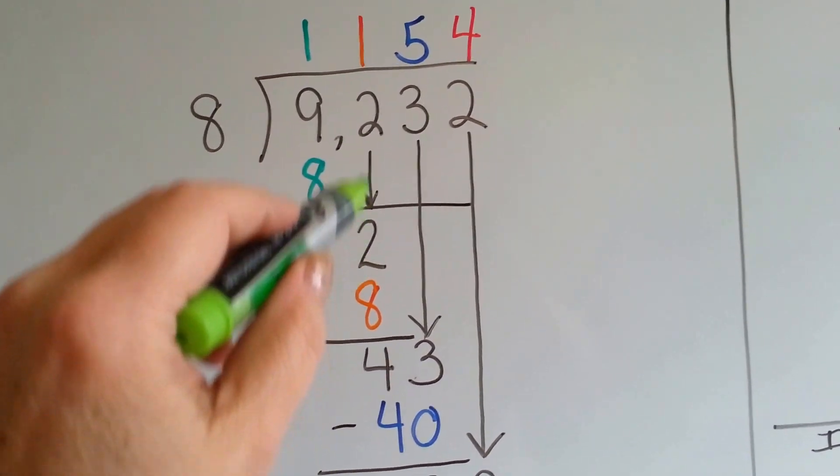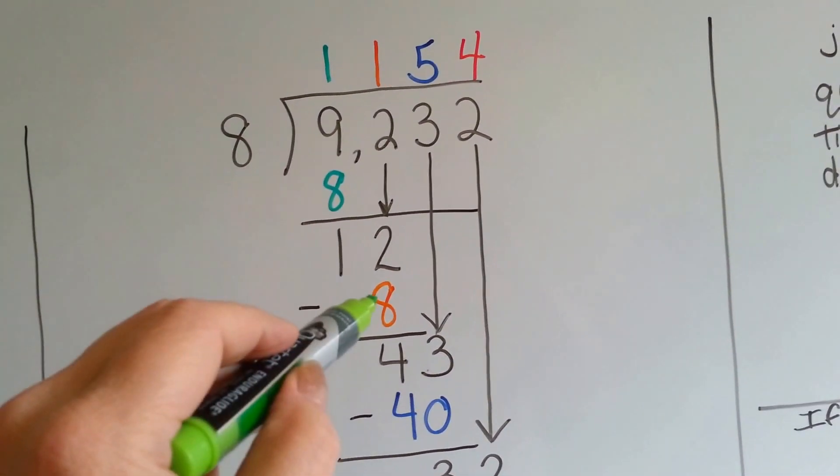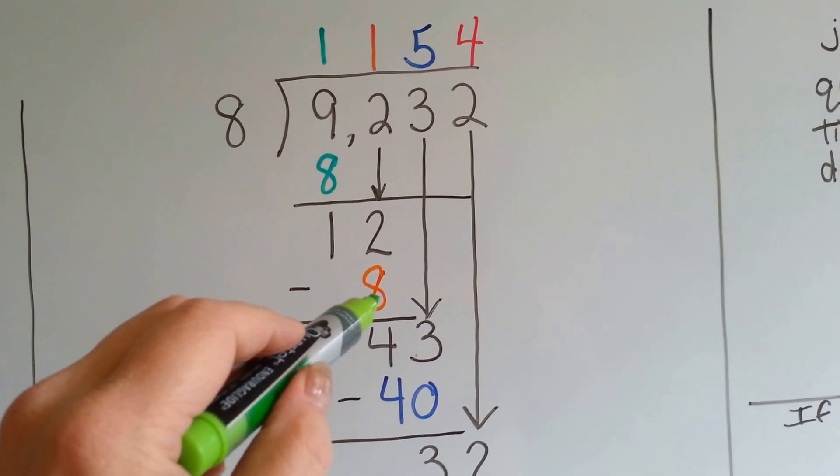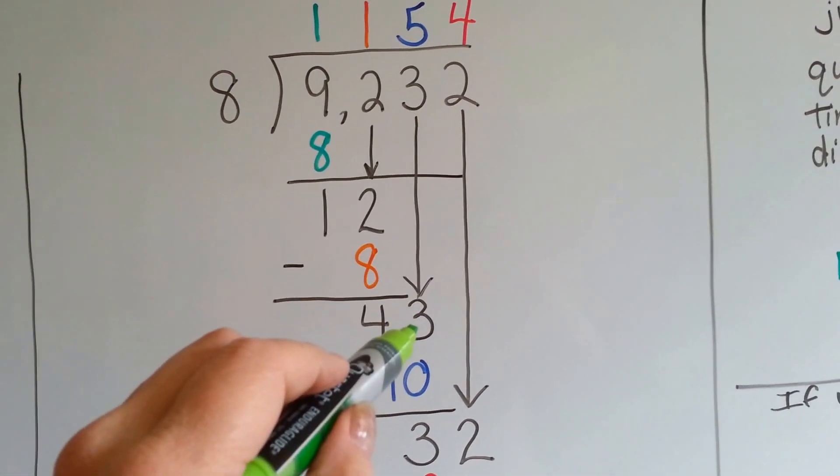Because it was the 2 that dropped down, that's where that number is going to go. 8 times 1 is 8. We do our subtraction, 12 take away 8 is 4. And now it's the 3's turn to drop down.